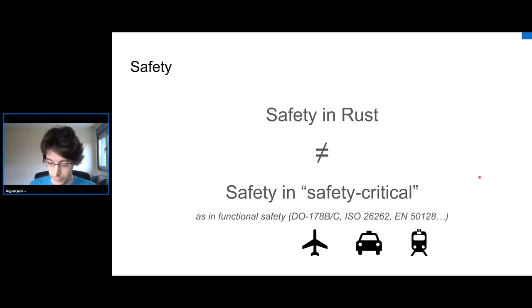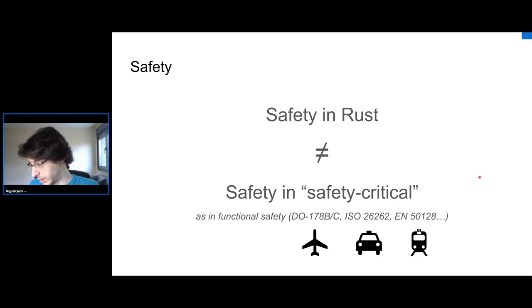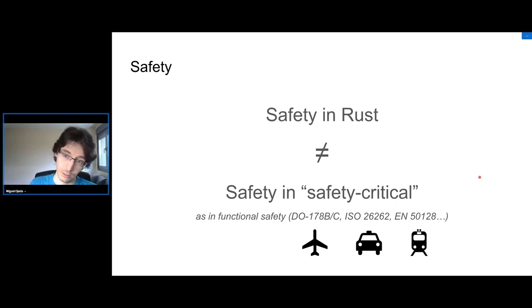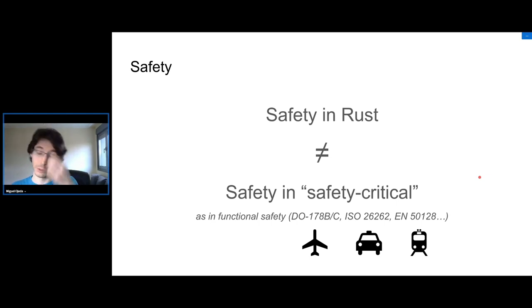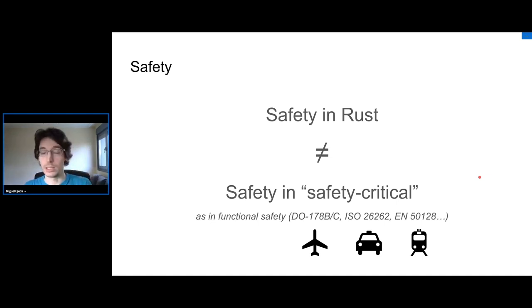You can write safety-critical software in C, and probably soon in Rust as well — companies will use it, along with Ada, etc. But Rust's 'safety' is different and is not related to safety-critical functional safety.